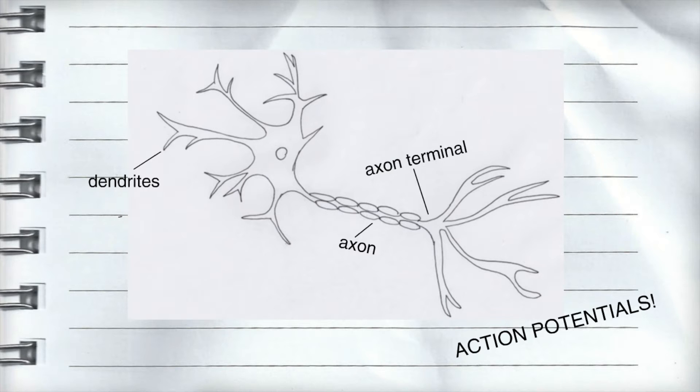Neurons receive incoming signals through their dendrites. If the signal is excitatory, the neuron fires an electrical impulse called an action potential. This action potential will travel down the axon to the axon terminal, where the neuron will pass the signal onto another cell.